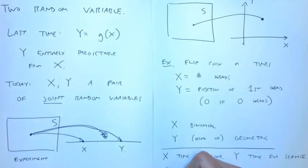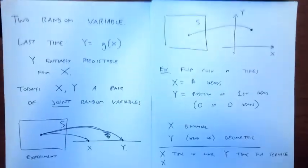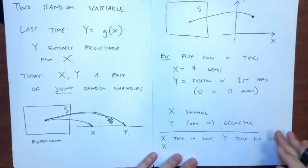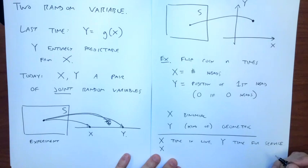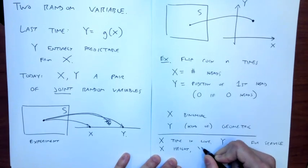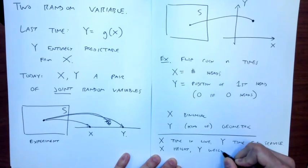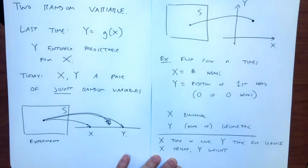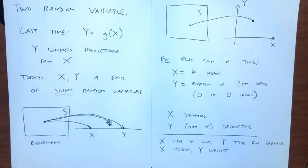Or X could be a person's height and Y a person's weight. There's bound to be some general relationship — the taller you are, the heavier you are, probably, in a general sense. That's what we're going to talk about: how do you model those relationships? All the terminology we've learned for single random variables carries over to multiple random variables — two-dimensional events, two-dimensional PDFs, two-dimensional CDFs.